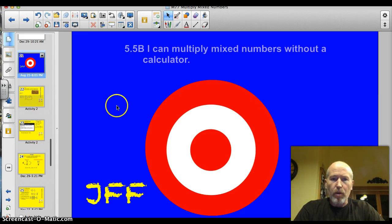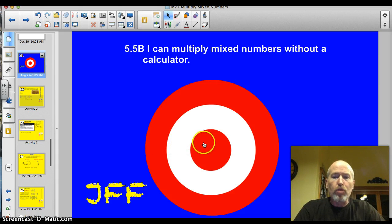Officially 5.5B, I can multiply mixed numbers without a calculator. Let's do this thing.